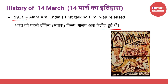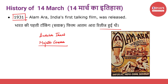Alam Ara, which means 'the ornament of the world,' was a film directed by Ardeshir Irani. It is a love story of a prince and a nomadic girl. It made its debut at the Majestic Cinema in Mumbai on 14th March 1931. This first Indian talking movie was so popular that police had to be called to control the crowds. The movie was advertised with the tagline: 'All living, breathing and 100% talking.'